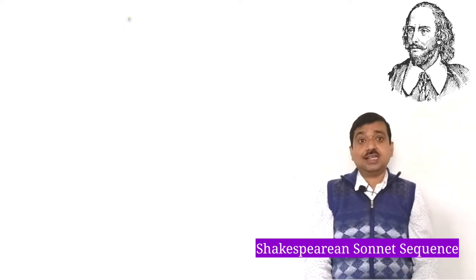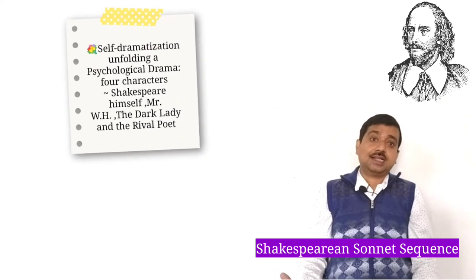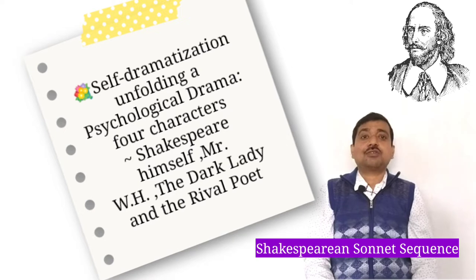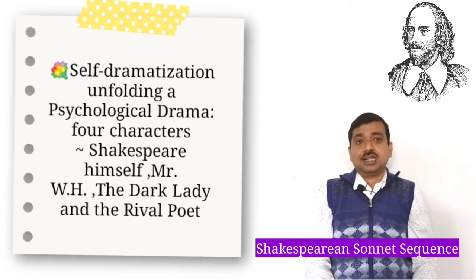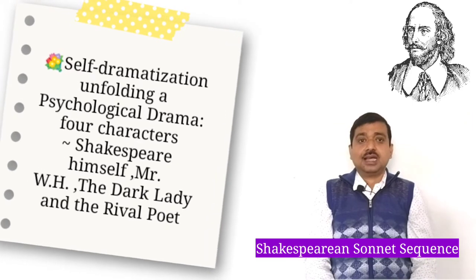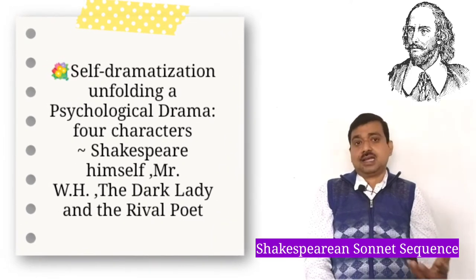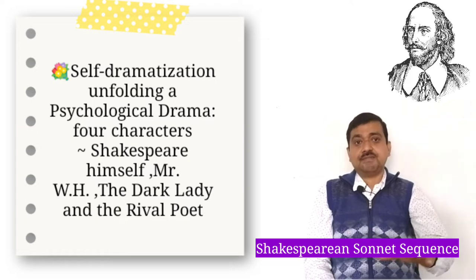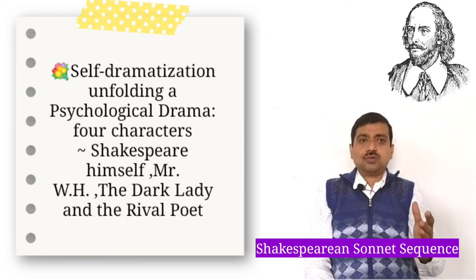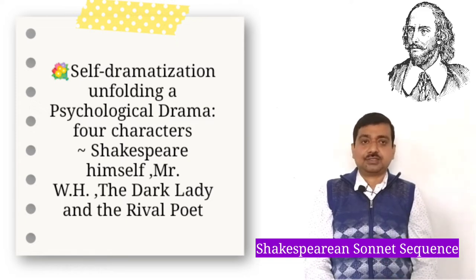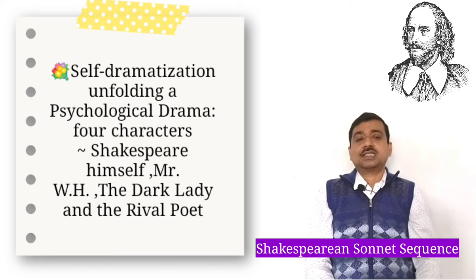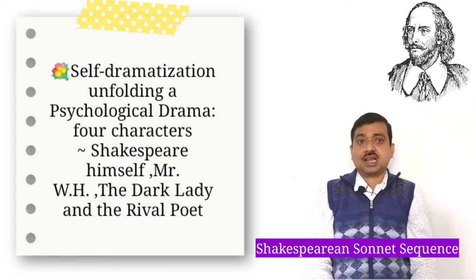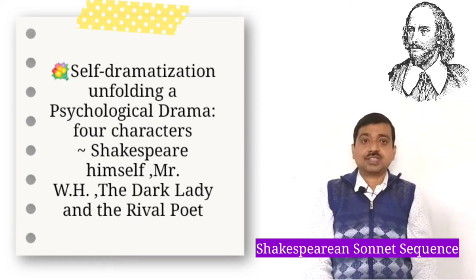Generally speaking, Shakespearean sonnets have been a riddle to critics and readers alike. In the maze of criticism and interpretation, it is more likely for one to lose his way than to get out of it. For those who believe that the sonnets display a chronological order of composition, the separate poems do not have much value in themselves unless they reveal a developing situation with a definite pattern of sustained meaning. There are two kinds of criticism: objectivity and subjectivity. Some critics call it the poetry of self-dramatization, unfolding a psychological drama in full five acts.